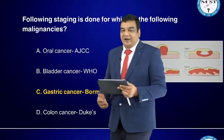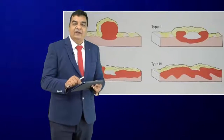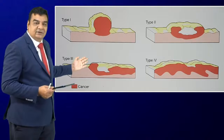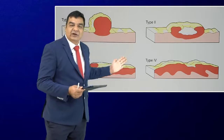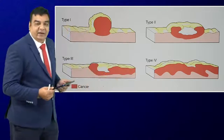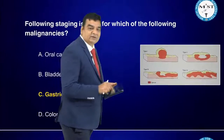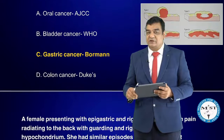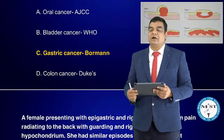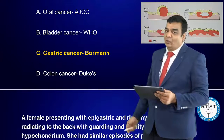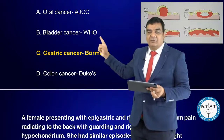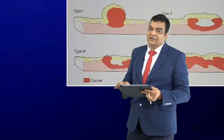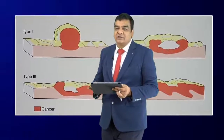A direct image from Bailey and Love showing the Borrmann staging of gastric cancer was shown, and the question asked which malignancy uses this staging system. Different staging systems: AJCC TNM for oral cancer, WHO TNM for bladder cancer, Borrmann staging for gastric cancer, and Duke's staging for colon cancer. The answer is gastric cancer.